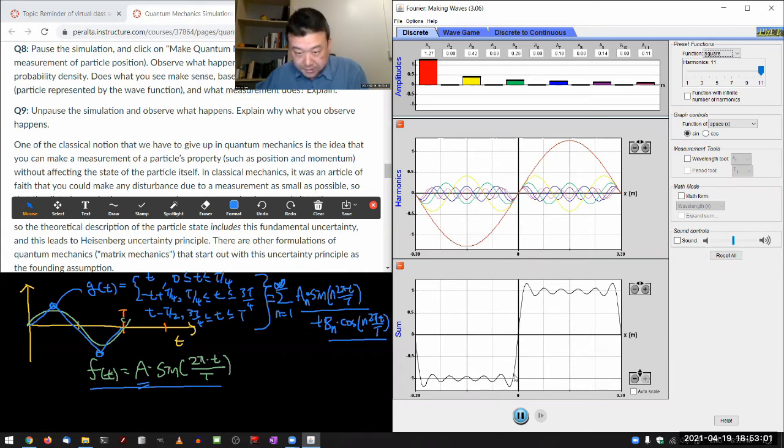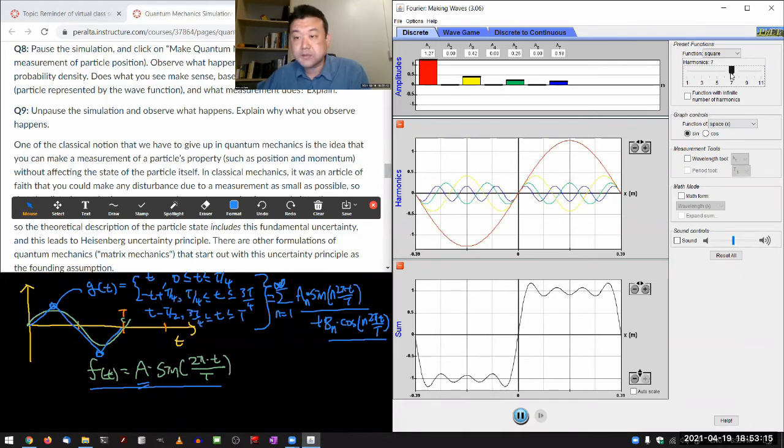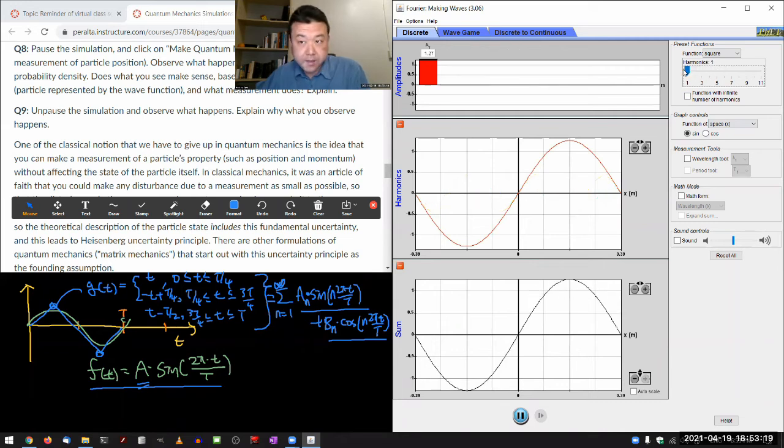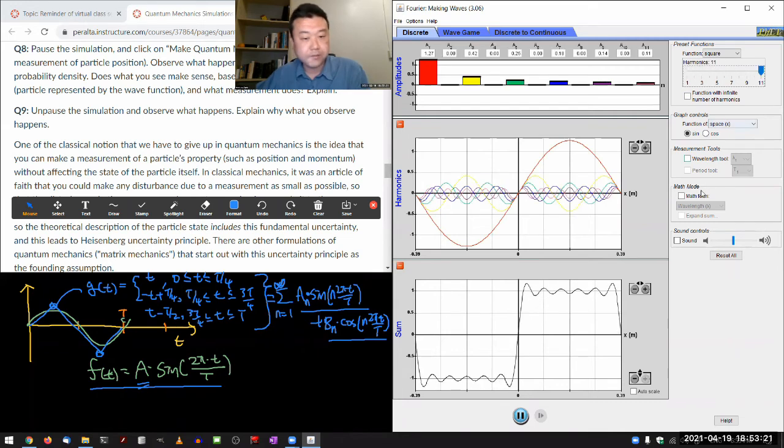And how steep this slope can be is eventually really limited by the highest number of harmonics you get to. You can see that as I reduce the value of harmonics, this steep thing, it gets smaller and smaller. And this is something you can, if you want, if you have like an hour to spend doing calculus, you can work this out yourself.